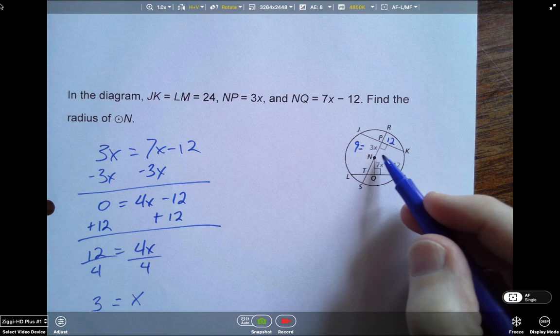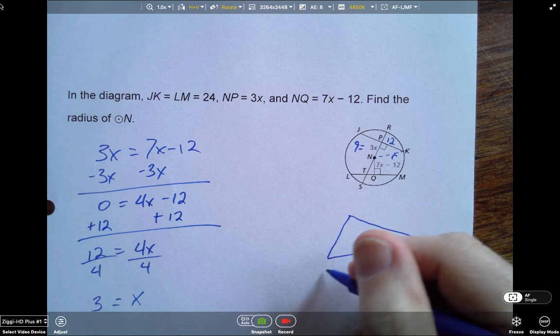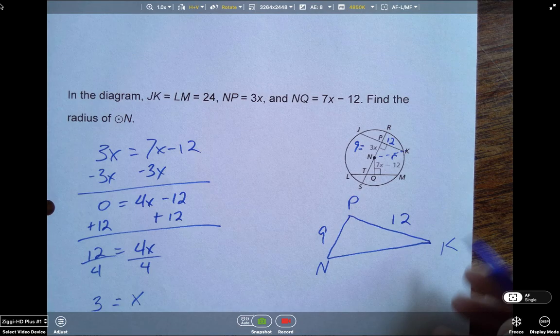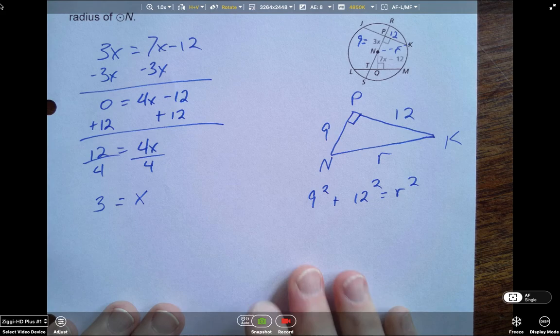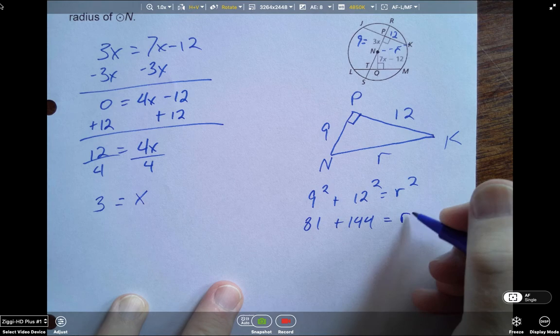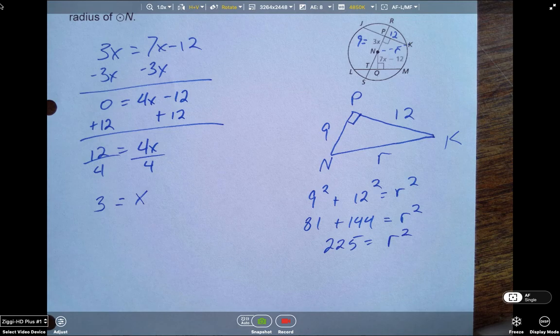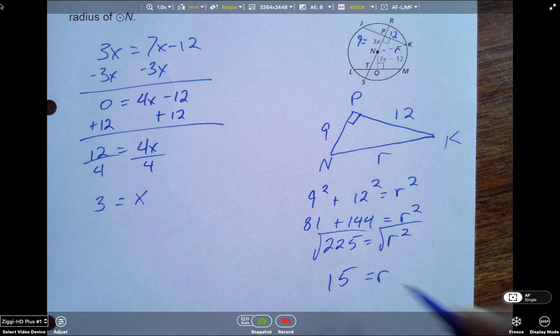So solving again, doing some more algebra. I know that my X is 3. So I know that the distance NP is 9. I know that JK is 24. So PK has to equal 12. So then drawing in my radius R there, I've got this right triangle. I'm going to draw more like we see it on this one. So this is N, this is K, and this is P, and NP is 9, PK is 12, and NK is my radius. And this is the right angle. So 9 squared plus 12 squared equals R squared. Doing the math, 81 plus 144 equals R squared. 81 plus 144, 225. So to figure out R, we do the square root, and the square root of 225 is 15. So the radius of the circle is 15.